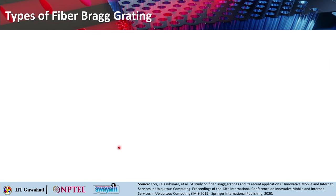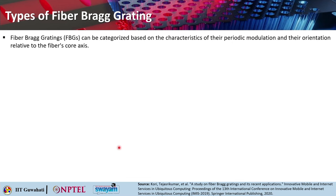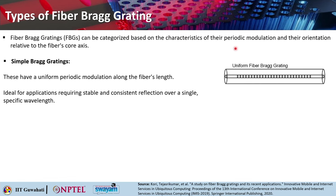Fiber Bragg gratings can be categorized based on the characteristics of their periodic modulation and their orientation relative to the fiber core axis. The first type is simple or uniform fiber Bragg grating, which has a uniform periodic modulation of the refractive index along the fiber core. This is ideal for applications requiring stable and consistent reflection at a single specific wavelength.